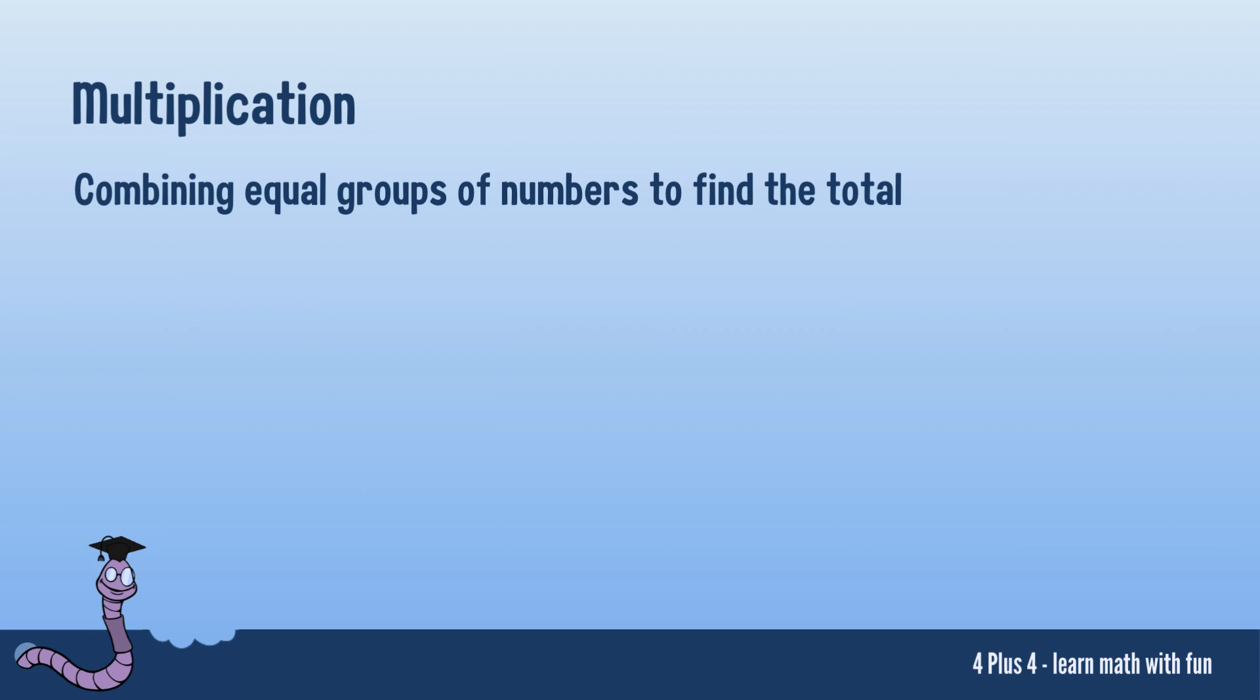Let's make this clearer with an example. Imagine you have 4 packs of crayons, and each pack contains 3 crayons. To find out how many crayons you have in total, you multiply the number of packs by the number of crayons in each pack. 4 packs multiplied by 3 crayons equals 12 crayons.